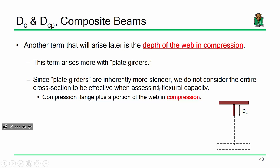D_sub_c is a term that shows up quite a bit in the spec — it's the depth of the web in compression. D_sub_c_p is how much web is in compression at the plastic moment. In our last example we computed MP and found that the plastic neutral axis was in the slab. That means everything above that line is in compression and everything below it is in tension. So for that girder, all of the web was experiencing tension at MP. How much of the web is in compression at MP — D_c_p? It's zero.